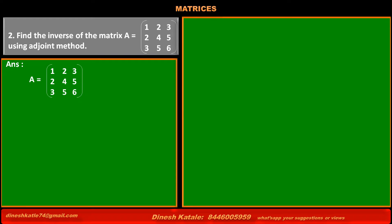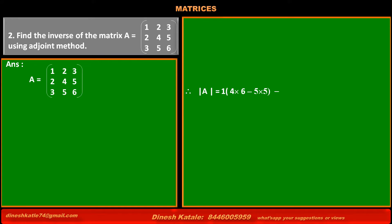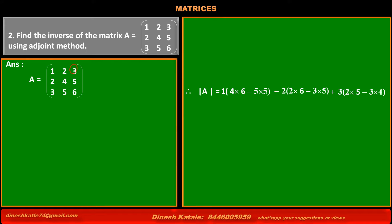The determinant of A is equal to 1, the first element of the first row, into the value of its minor: (4×6 minus 5×5), minus sign for the cofactor of element at first row second column, into its minor (2×6 minus 3×5), plus the third element of the first row into its minor (2×5 minus 3×4).